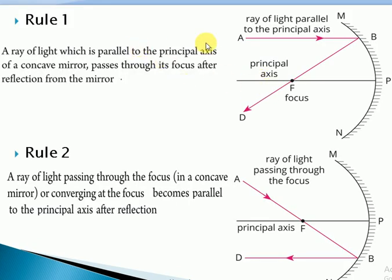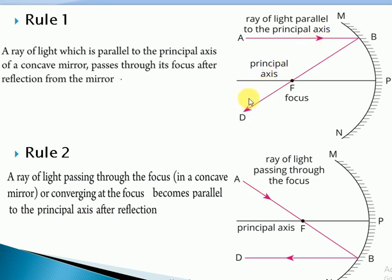Rule 1: A ray of light which is parallel to the principal axis of a concave mirror passes through its focus after reflection from the mirror. You need to pay attention to the arrowhead — it is very important that you draw this arrowhead to show which is the incident ray and which is the reflected ray. Rule 2 is the vice versa of Rule 1: a ray of light passing through the focus of a concave mirror becomes parallel to the principal axis after reflection.